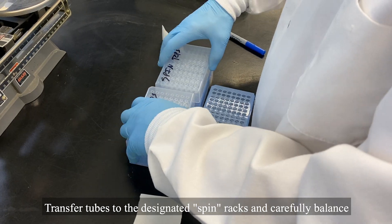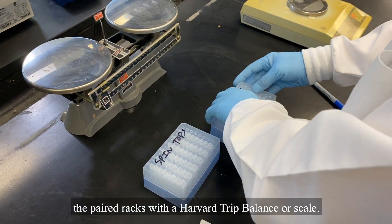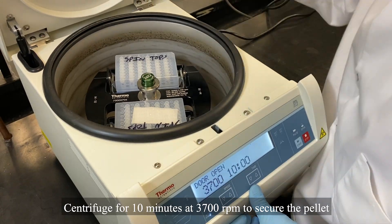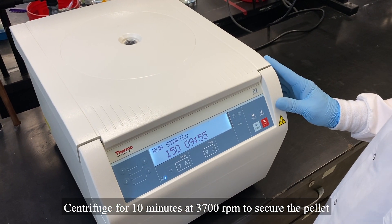Transfer tubes to the designated spin racks and carefully balance the paired racks with a Harvard trip balancer scale. Centrifuge for 10 minutes at 3700 RPM to secure the pellet at the tube bottom.